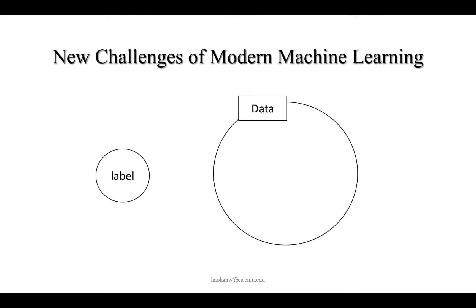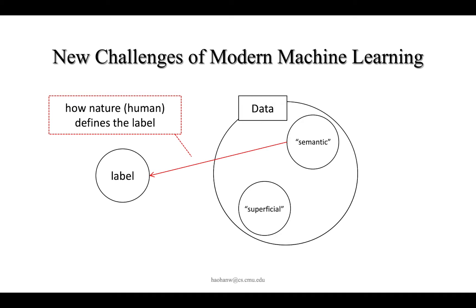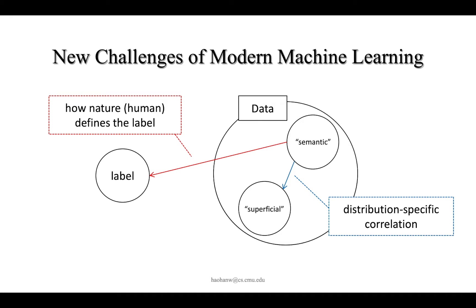We further study the fundamentals of this problem. Consider a typical machine learning problem where we collect data and its annotations. Within the samples, there are semantic signals and superficial signals. Semantic signals align with how we annotate the data. Unfortunately, there are usually some distribution-specific correlations between the semantic signals and the superficial signals.